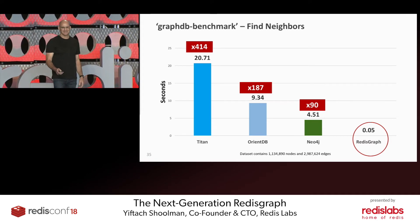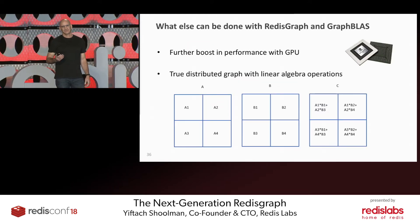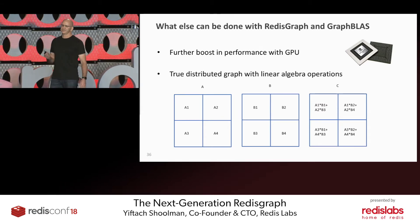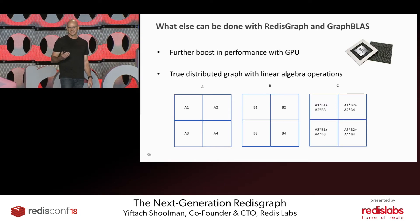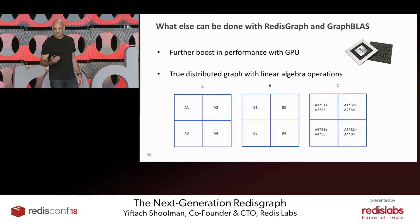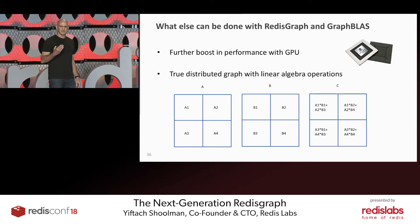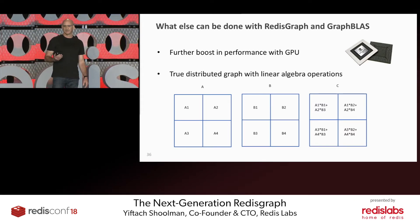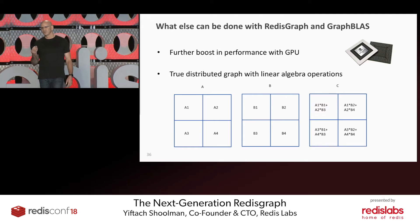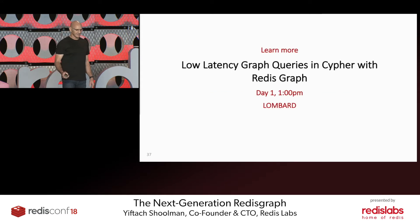Thank you very much — extremely impressive. Just think what else you can do: tomorrow you could implement RedisGraph on top of GraphBLAS running on GPU and have another one or two orders of magnitude in performance, so instead of several seconds you can do it in less than one millisecond. You can also think about how to distribute this matrix across multiple nodes and use the power of linear algebra to query the graph in a truly distributed manner.